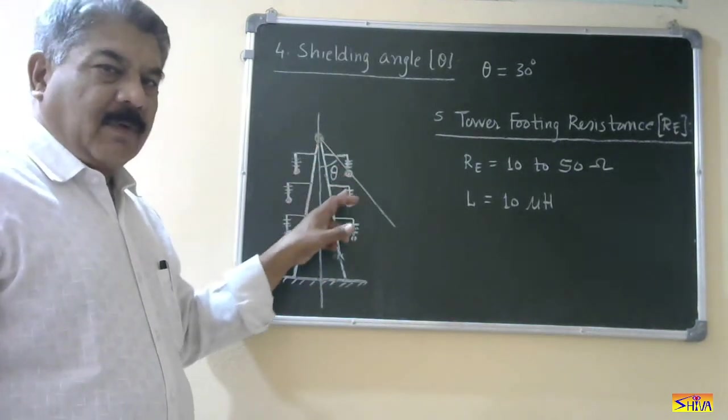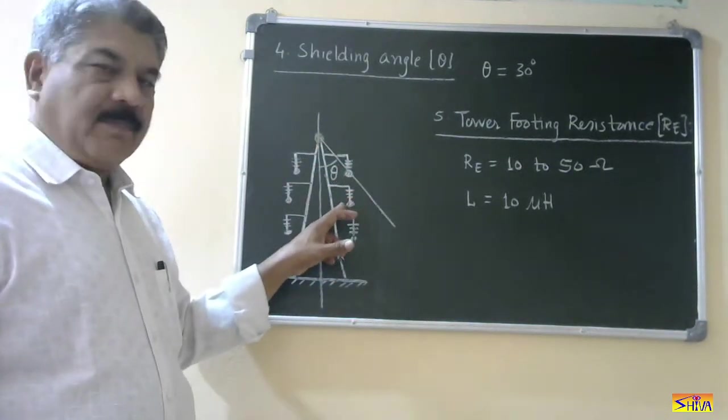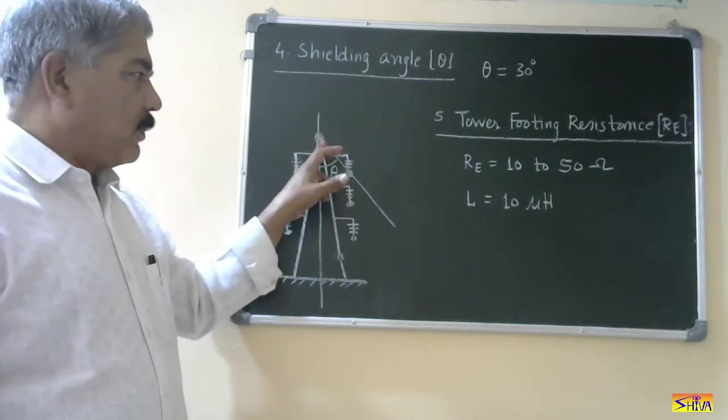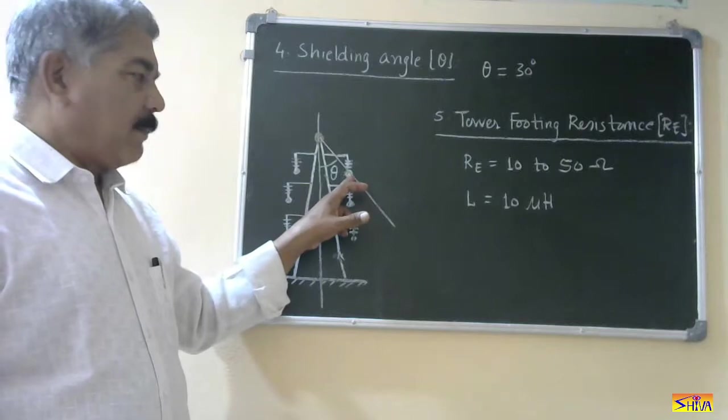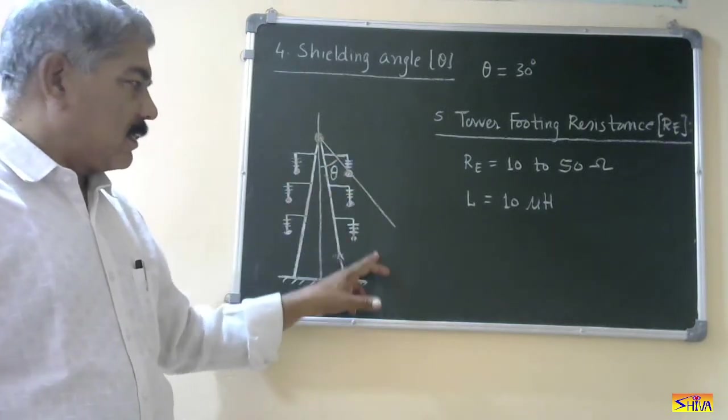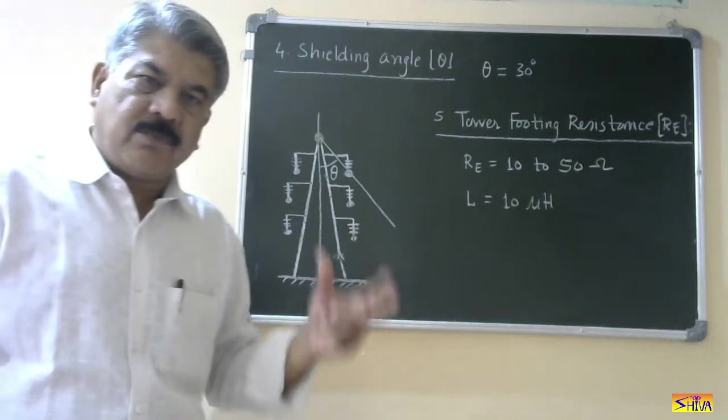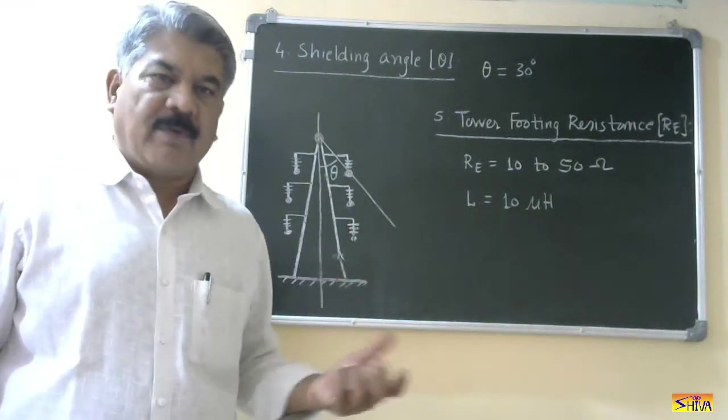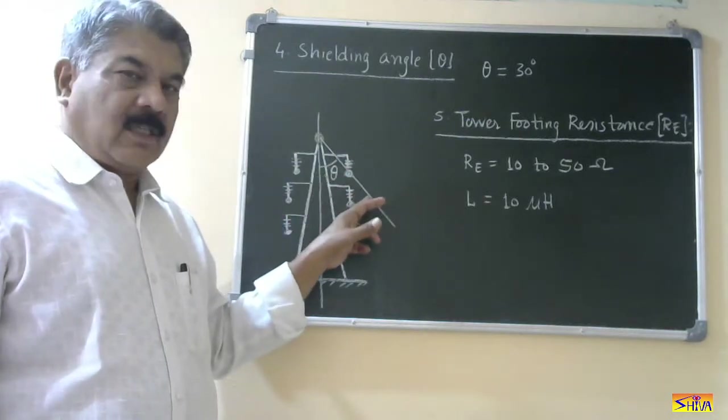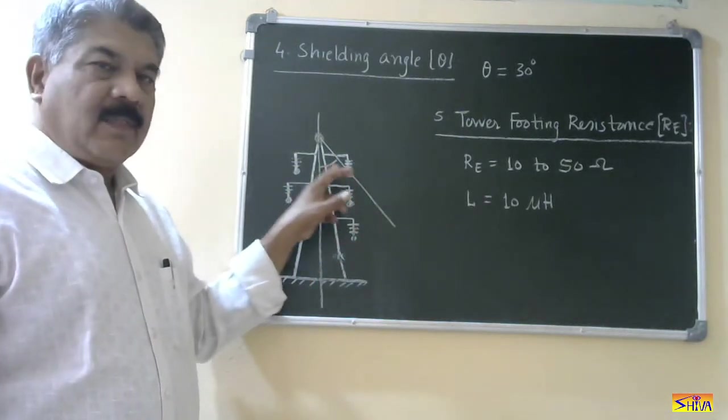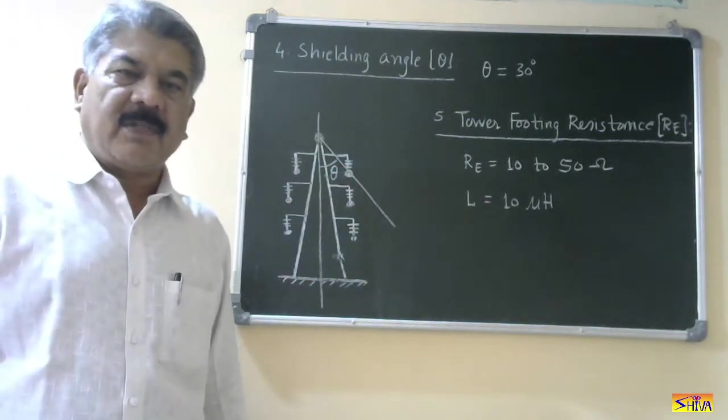So this is the vertical line joining this ground conductor with the earth. Then there are three power conductors. Phase A, Phase B and Phase C. So we join this ground wire and power conductor. This line and this line. Next we consider the outermost power conductor. So in this case the outermost power conductor is this one. This angle is theta. This is called as shielding angle.